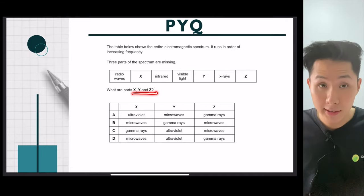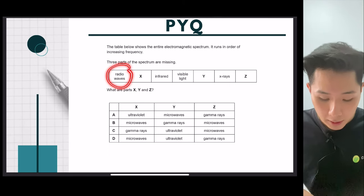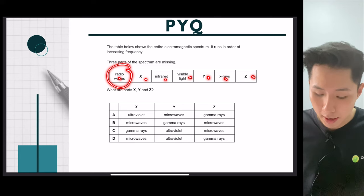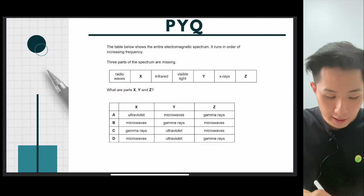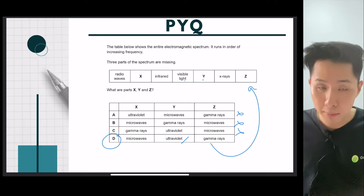What are parts X, Y, Z? So these are the waves in the electromagnetic spectrum. Radio. Remember, rich man invented very unusual X-ray gun. Man, M stands for microwave. So A and C are incorrect. Invented very unusual will be ultraviolet. Y will be ultraviolet. So here we did. So the answer is D, in which the last one should be gamma ray.